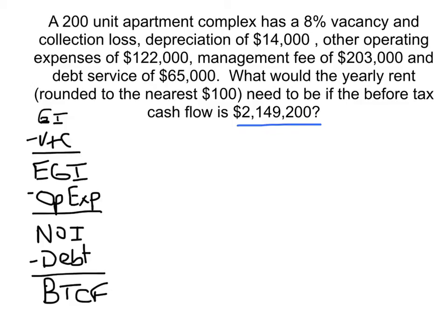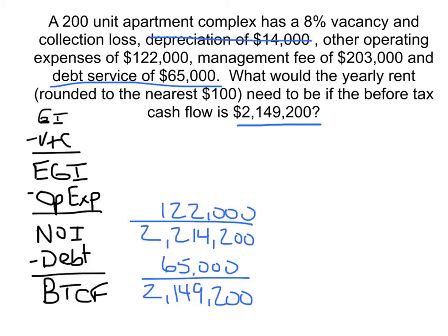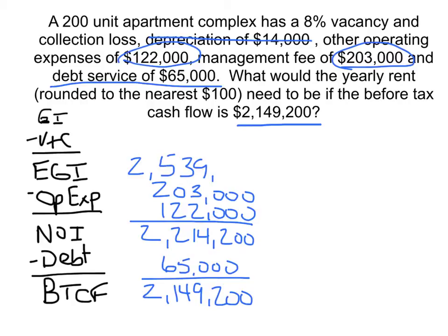We start with the before tax cash flow of $2,149,200. To that we add back our debt service of $65,000 to get a net operating income of $2,214,200. Next we add back our operating expenses — we don't take into account depreciation — other operating expenses of $122,000 and a management fee of $203,000. When we do that we get an effective gross income of $2,539,200.